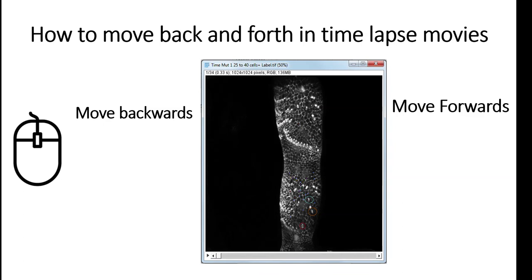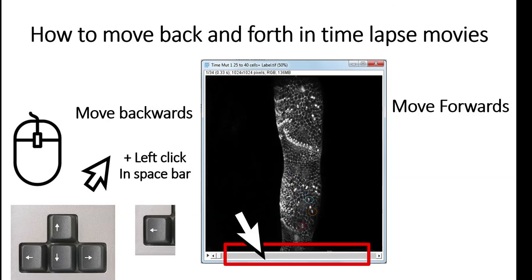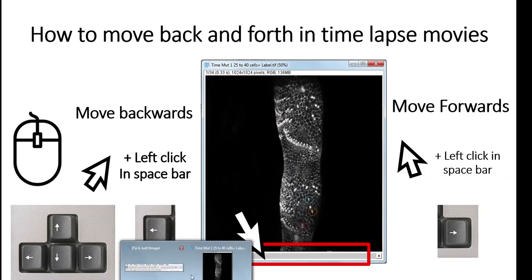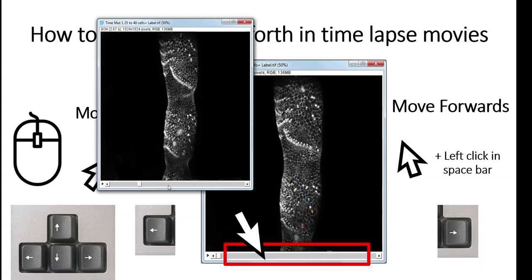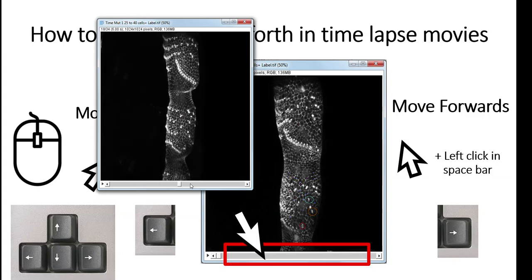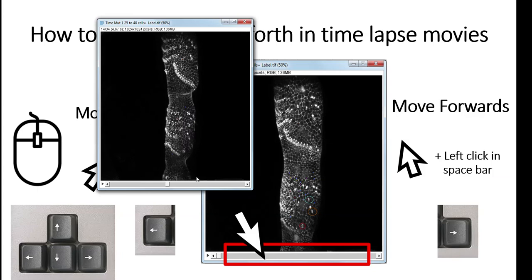You can also use a different way to go back and forth in the movies, which is to use the keyboard arrows. You need to left click in the spacebar area, then use your arrow keys — to go forward, left click here and use the arrows. Let me show you: I left click anywhere in this section, then if I press the left arrow I can go back, and if I press the right arrow I can go forward. You can also just left click on this square and move either backwards or forwards.